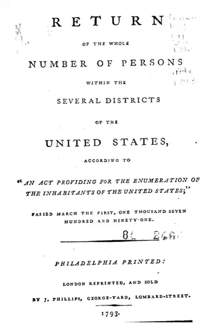The 1990 census was not designed to capture multiple racial responses, and when individuals marked the other race option and provided a multiple write-in, the response was assigned according to the race written first. For example, a write-in of 'Black-white' was assigned a code of black, and a write-in of 'White-black' was assigned a code of white.